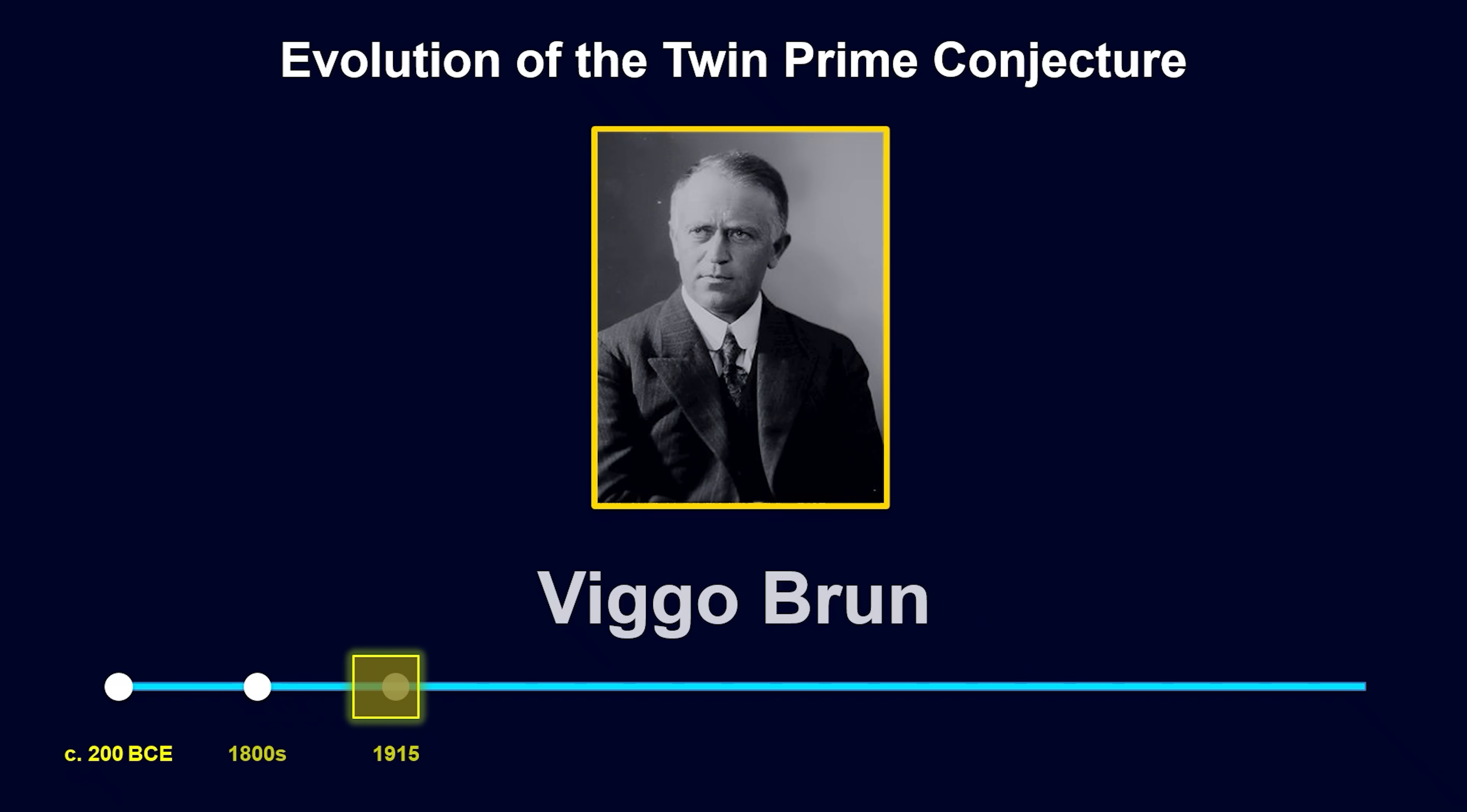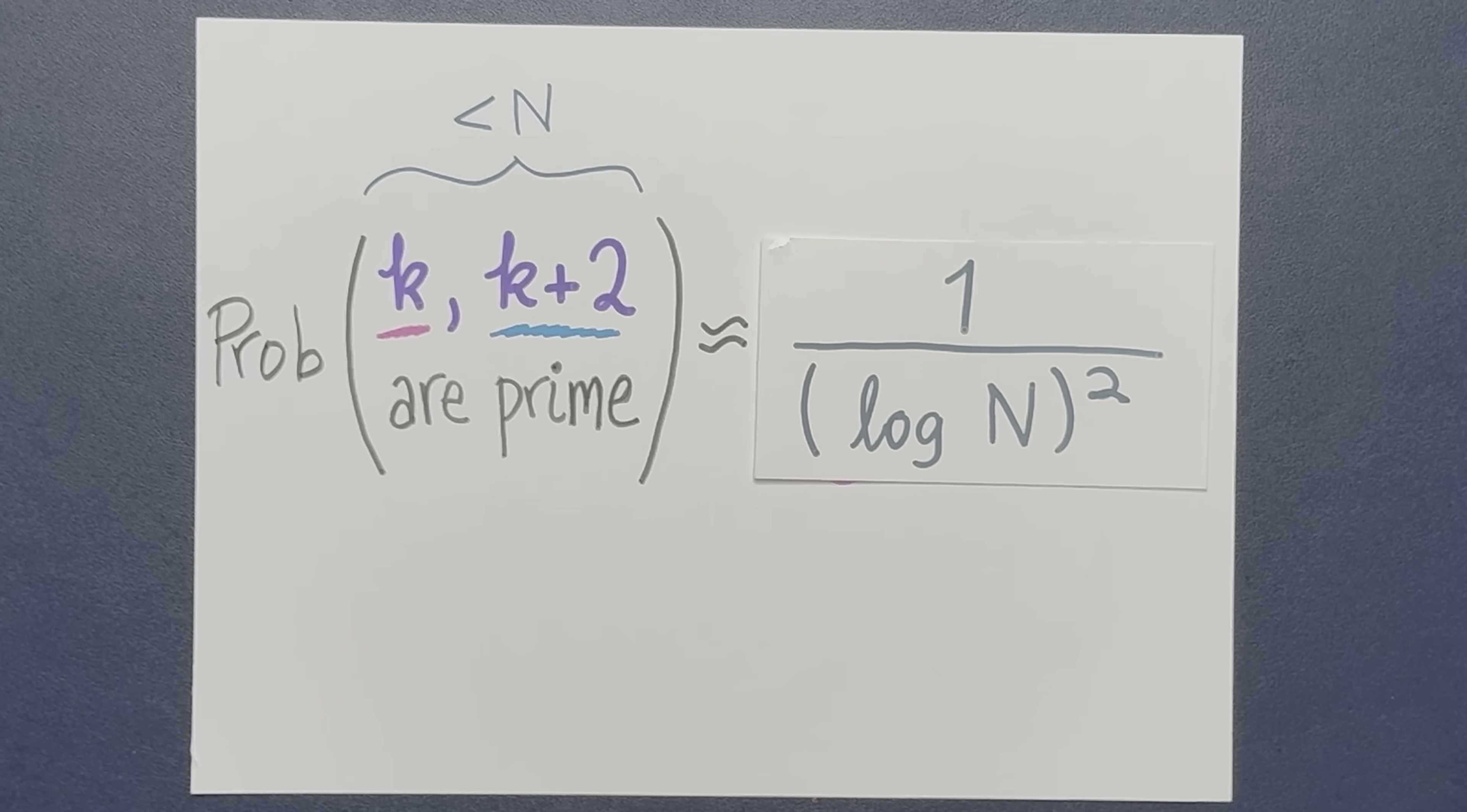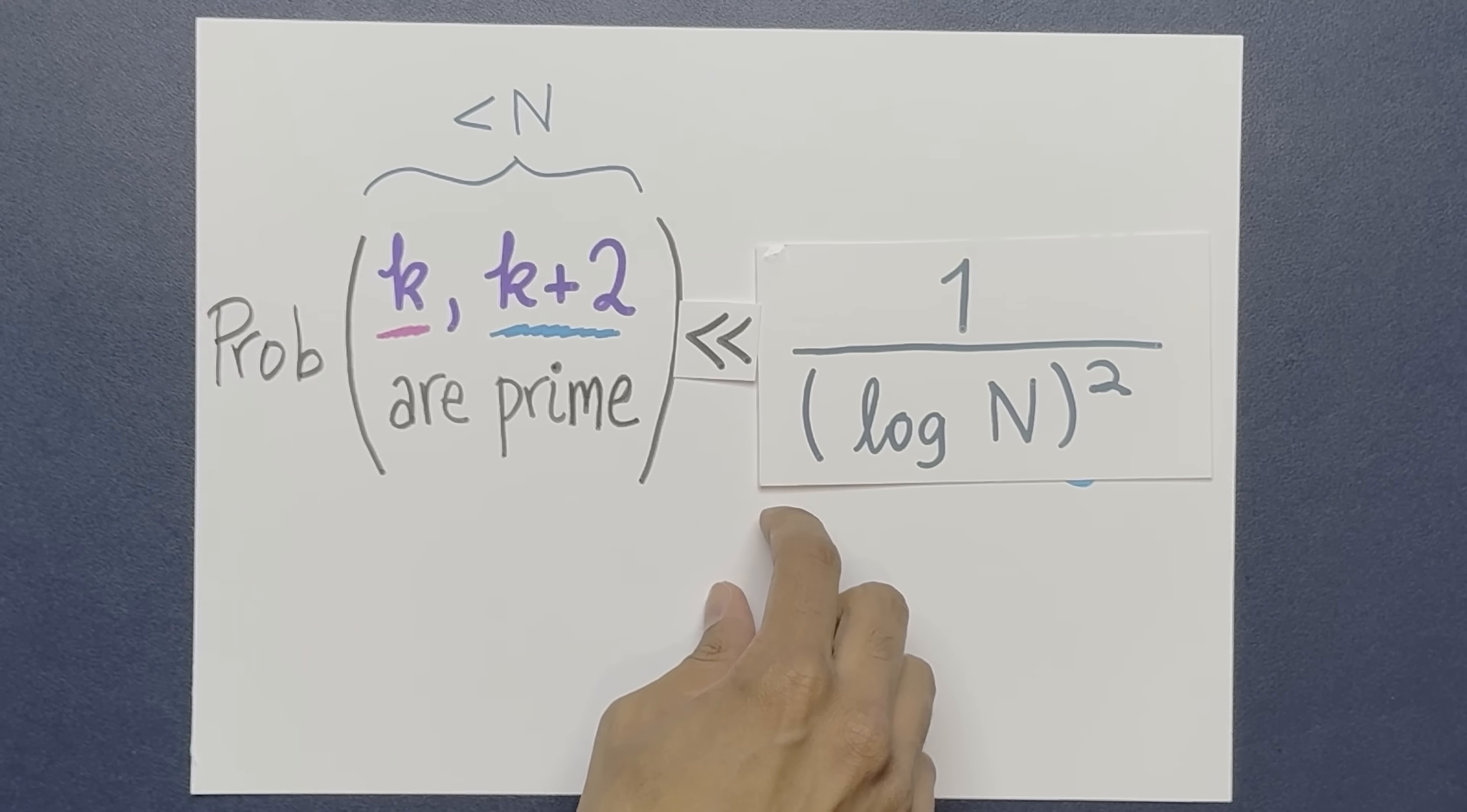Now, this hand-wavy calculation is useful because it tells us what we should expect the distribution of twin primes to be. Of course, proving this directly is going to be really, really hard, but Brunn didn't shy away from it. He asked, okay, if we can't prove the whole thing, can we at least prove one inequality? And that's exactly what Brunn did. He showed that there is an upper bound here.